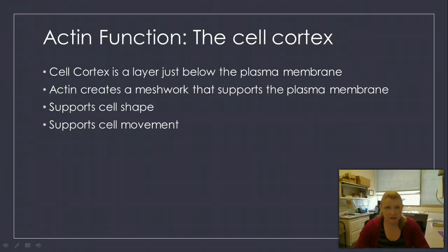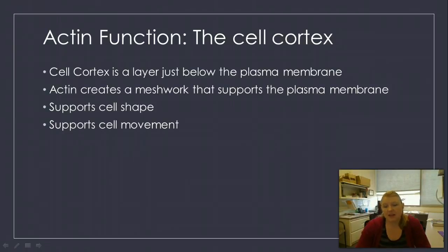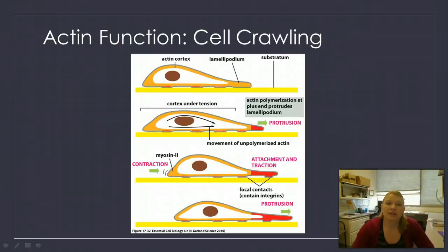Hopefully you've wondered how it's possible that this fluid membrane acts as the barrier to the cell. Well, it's because it's not just the membrane — it has the cell cortex underneath that helps maintain cell shape. And if it's a cell that can move, it supports cell movement. Here's an example of cell crawling.